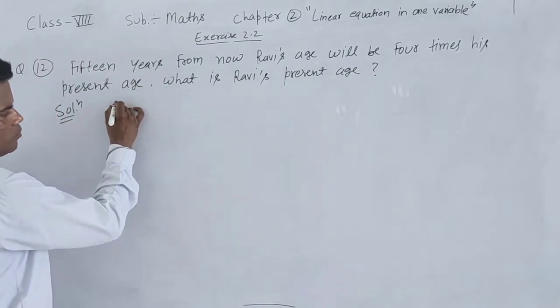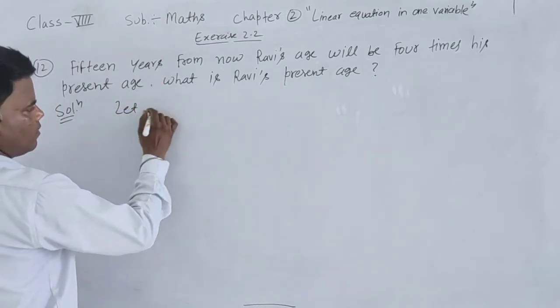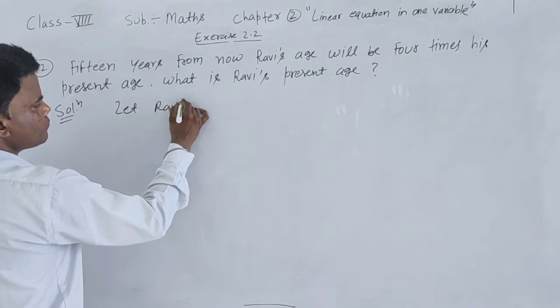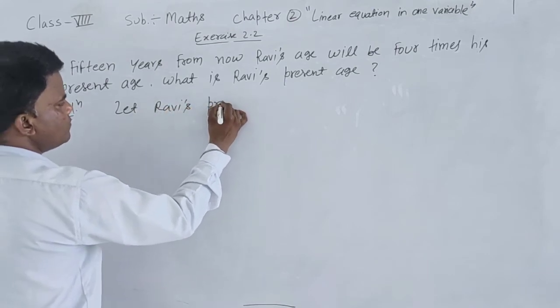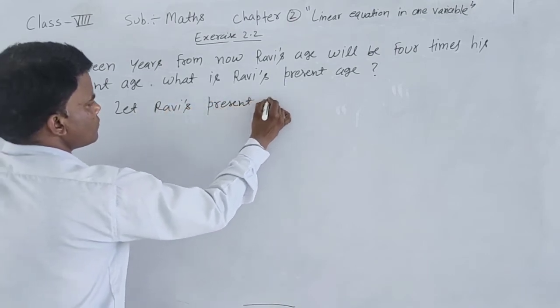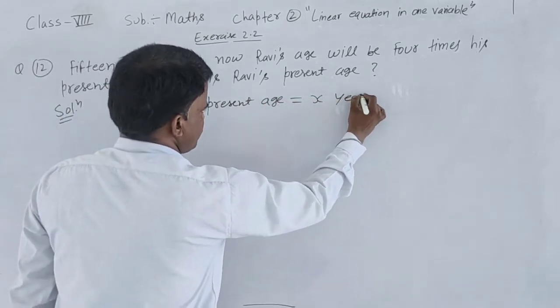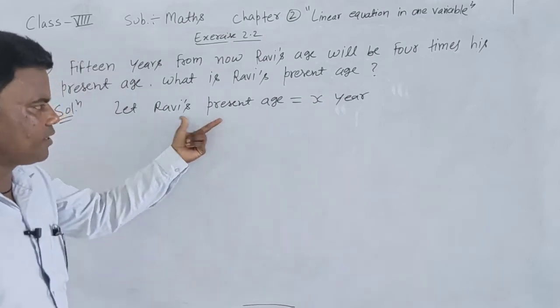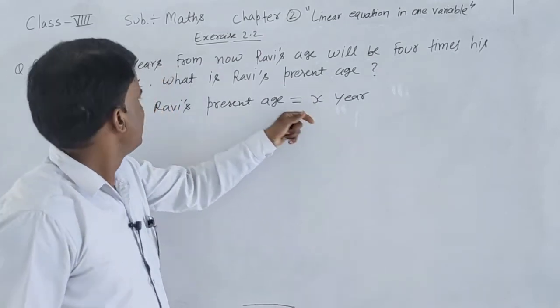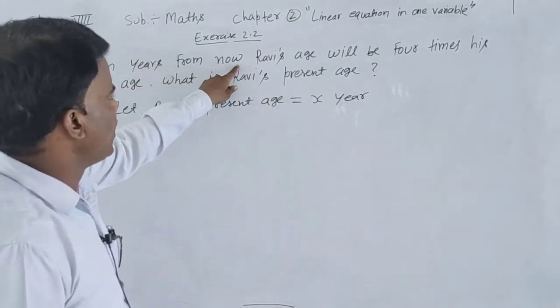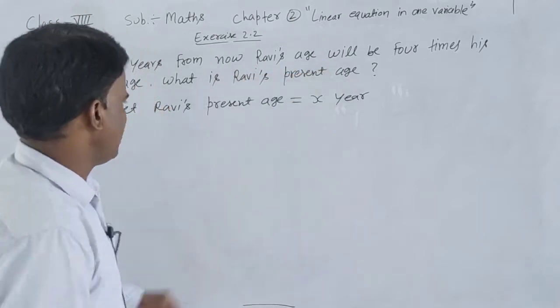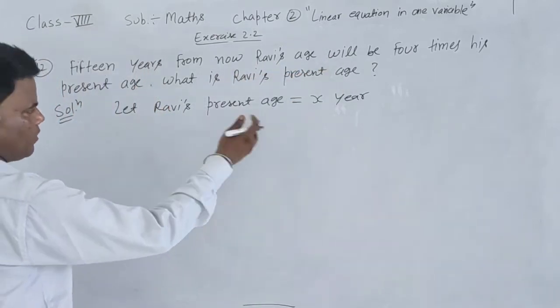Let's assume this. Let Ravi's present age equal to x years. We are assuming Ravi's present age as x years. 15 years from now, Ravi's age 15 years from now.